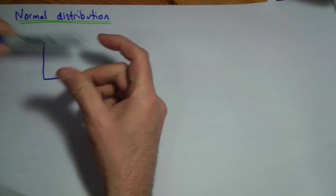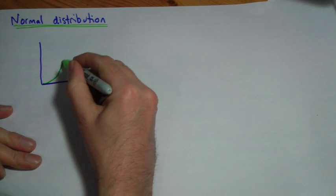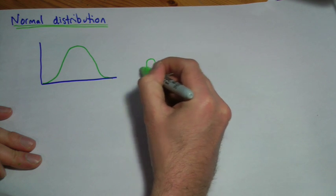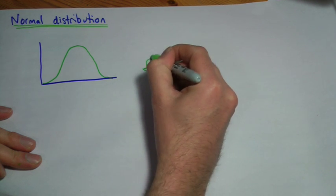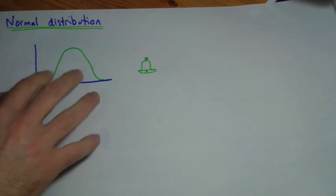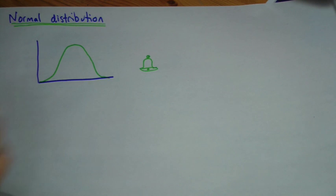And it's sometimes referred to as a bell curve, because it looks a bit like a bell. There's a kind of bell that you'd ring. It's got that kind of shape. In fact, it has specific mathematical properties about it.